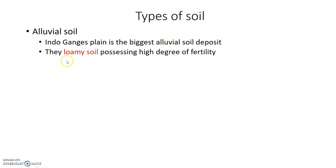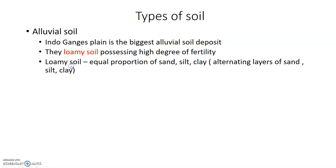Loamy soil contains an equal proportion of sand, silt, and clay. This type of soil has a high degree of fertility.